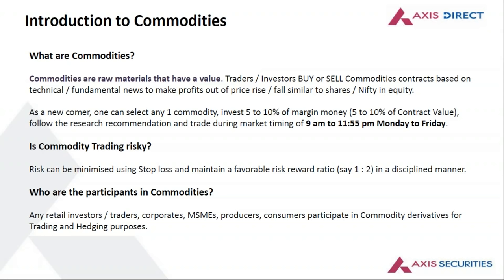Similarly, if I have bought a gold contract at 33,000 rupees per 10 grams and the price moves up to 34,000 rupees, I will make 1,000 rupees profit per 10 grams. It is similar to shares — you buy at a lesser price and sell at a higher price. In commodities, the research team recommends you to buy or sell based on supply and demand: if supply is less and demand is more, prices tend to go up — that's when you receive a buy call. When supply is more and demand is less, prices come down — that's when you receive a sell call.